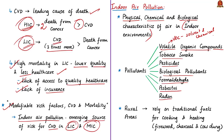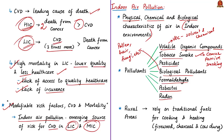VOCs originate mainly from solvents and chemicals — indoor sources include perfumes, hair sprays, furniture polish, glues, and air fresheners. The main health effect is irritation of the eyes, nose, and throat; in severe cases, headaches, nausea, and loss of coordination. Tobacco smoke causes cancer, passive smoking leads to burning eyes, throat irritation, bronchitis, severe asthma, and decreased lung function. Biological pollutants such as pollen, pet hair, fungi, and bacteria cause asthma and allergic diseases.